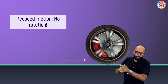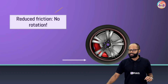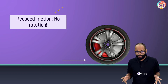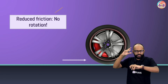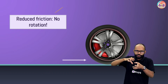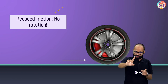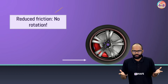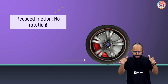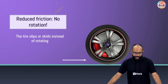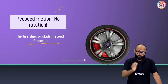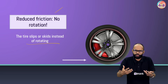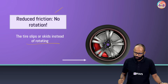Reduced friction means the tire starts slipping — technically we call it skidding — and that's how a lot of accidents happen. You might have seen when it snows, tires don't have grip and they start slipping. Now, how do treads come in here? A tire slips or skids instead of rotating when there is water between the tire and the road acting as a lubricant, not transferring enough friction to the tire.